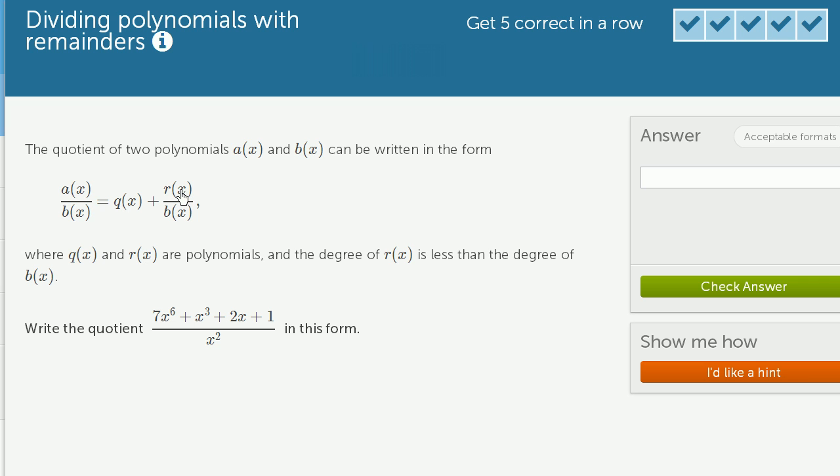where q of x and r of x are polynomials, and the degree of r of x is less than the degree of b of x.